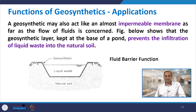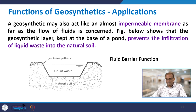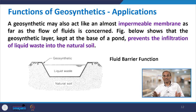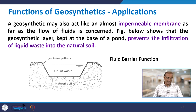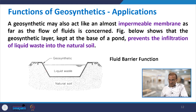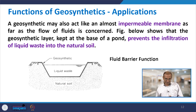A geosynthetic may also act as an almost impermeable membrane as far as flow of fluids is concerned — this is the fluid barrier function. For example, when liquid waste is stored over natural soil, the objective is that the natural soil should not be contaminated. A layer of geotextile used as a fluid barrier is impermeable and will not allow the liquid waste to penetrate into the natural soil.